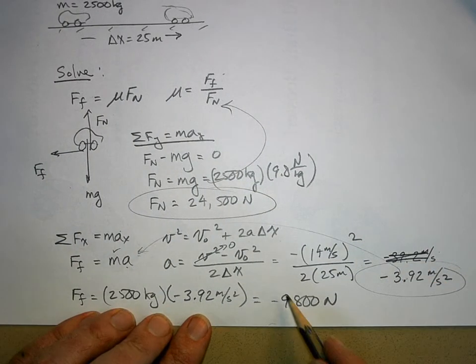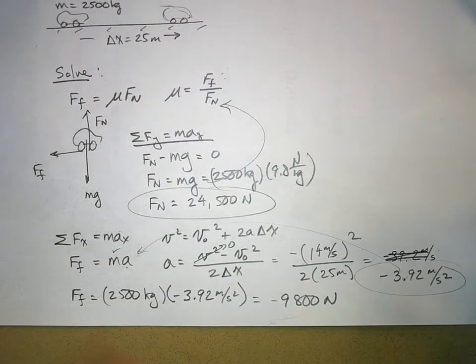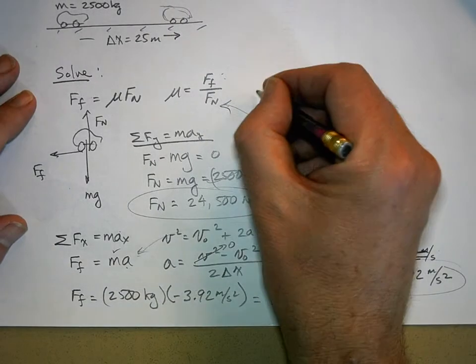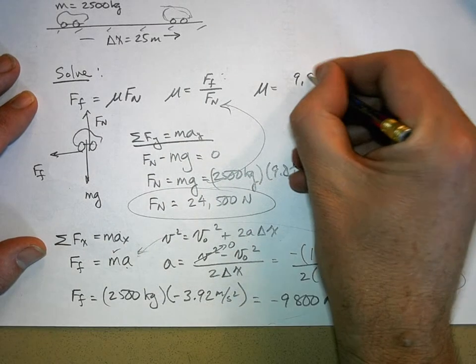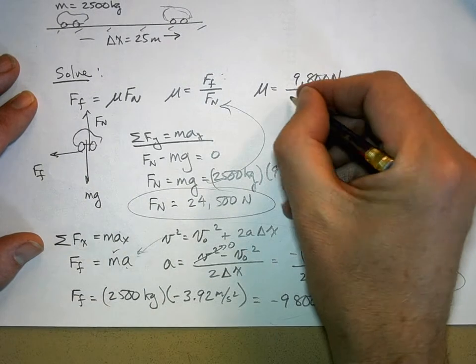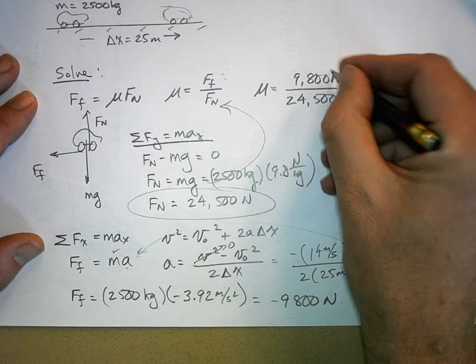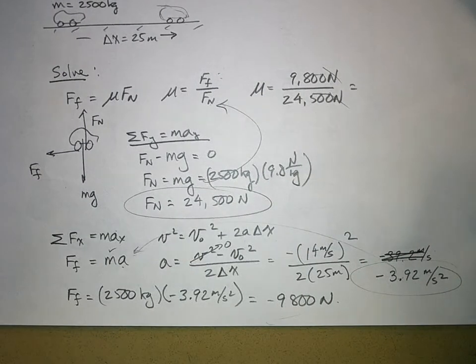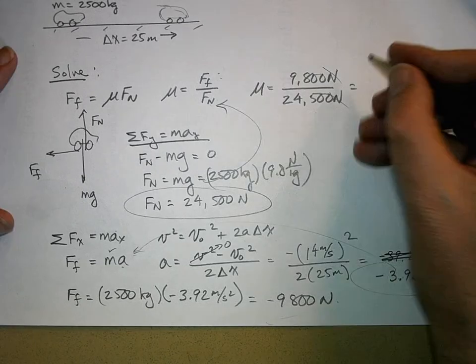Now, you don't need the negative here because this is just the magnitude of the friction force divided by the magnitude of the normal force. So now I can figure out what mu is. The friction force is 9,800 newtons divided by the normal force, which we got to be 24,500 newtons. Newtons cancel newtons. It's dimensionless. And what is 9,800 divided by 24,500? It's 0.4.